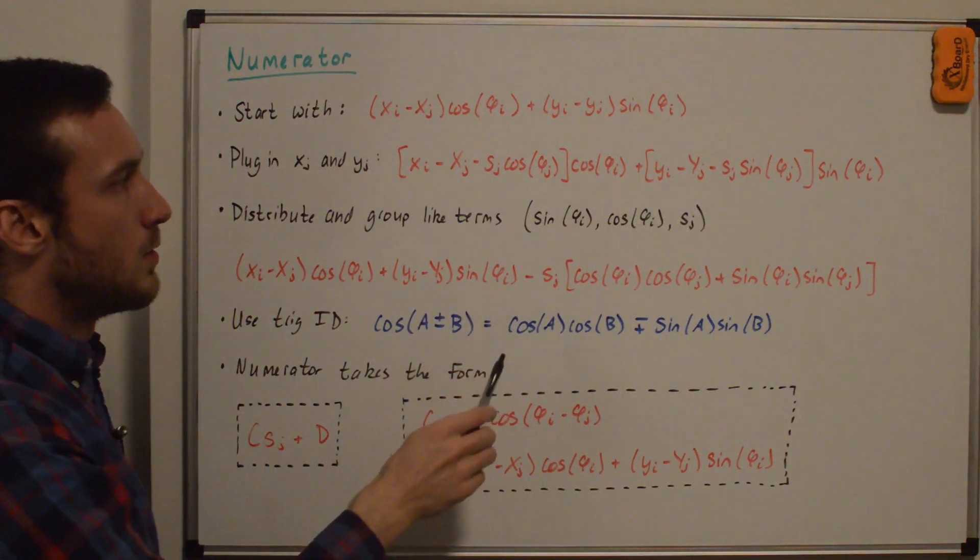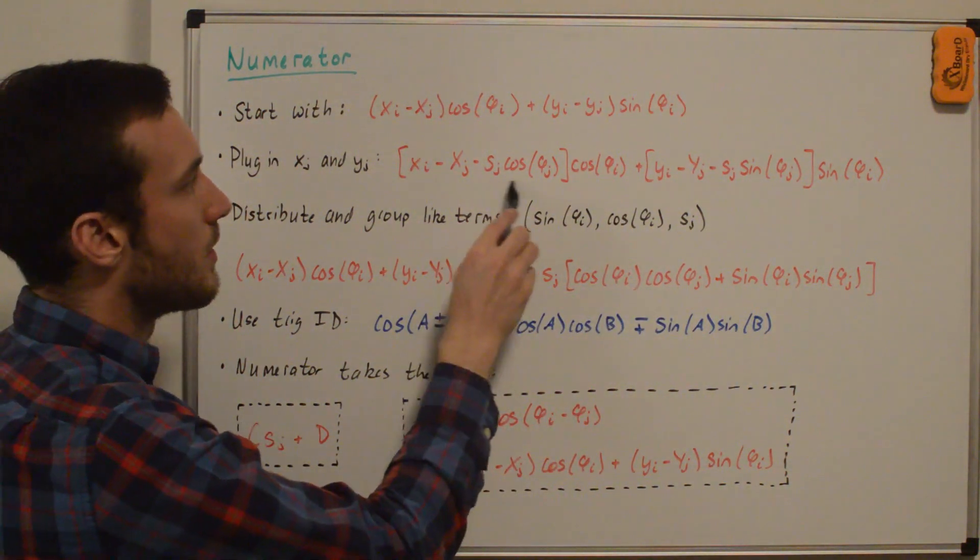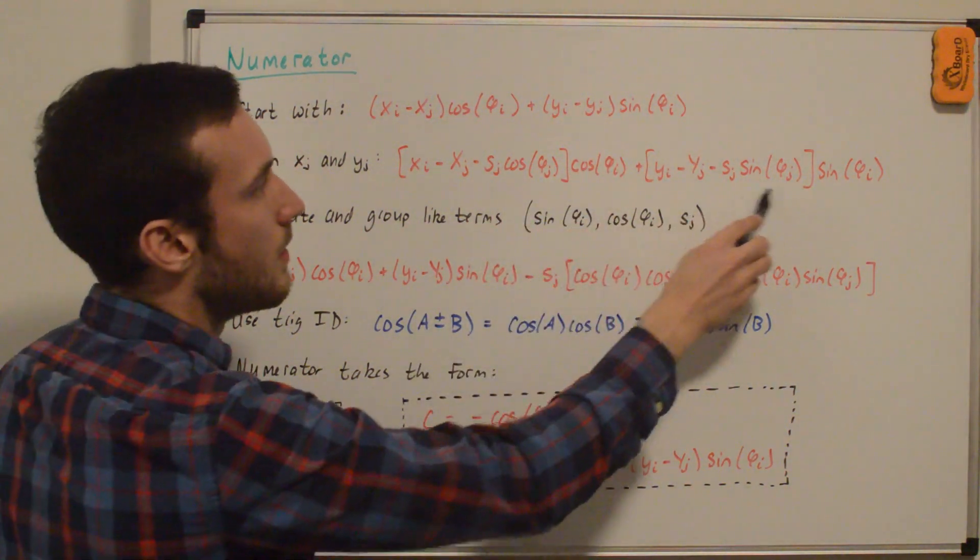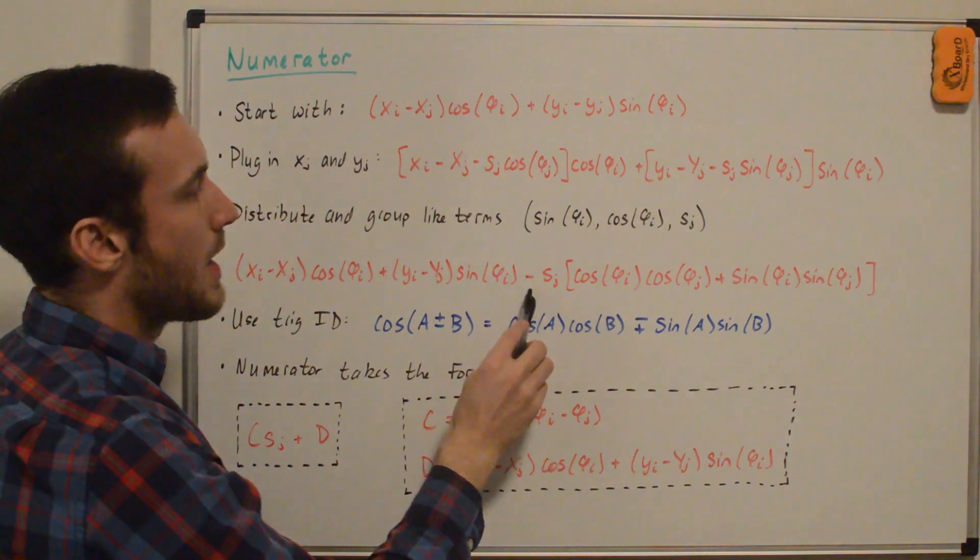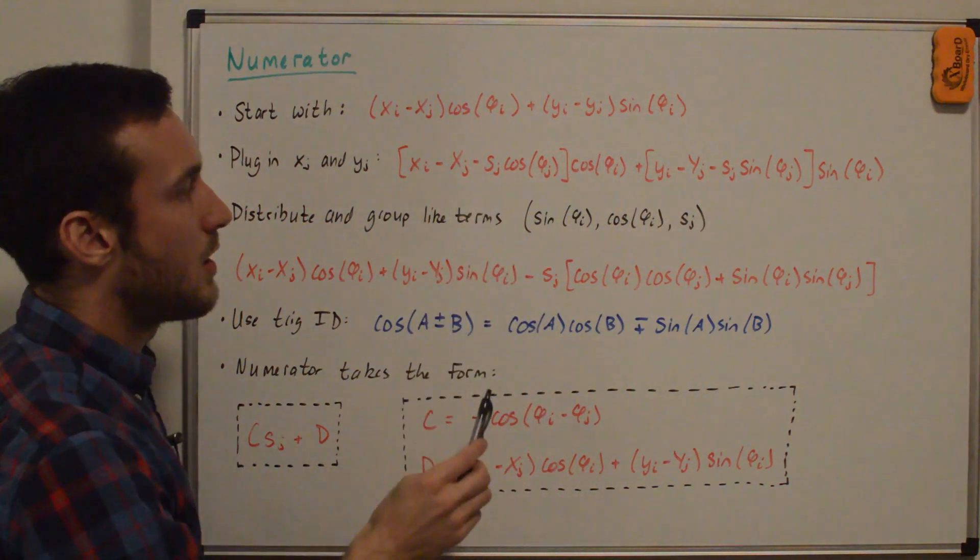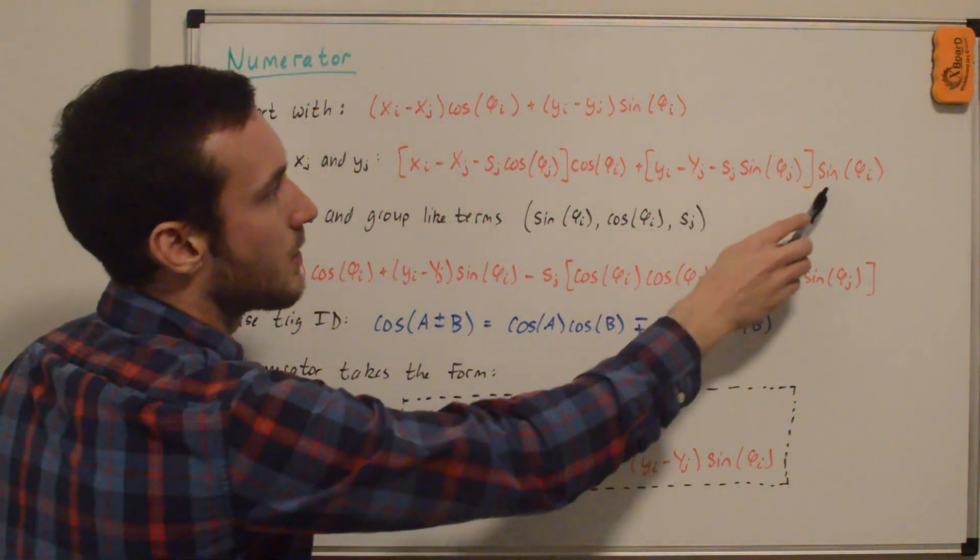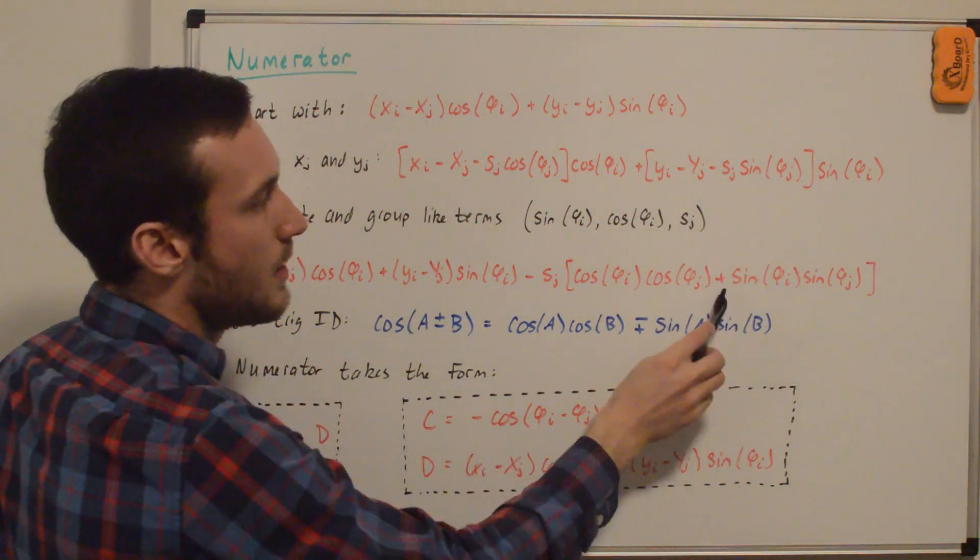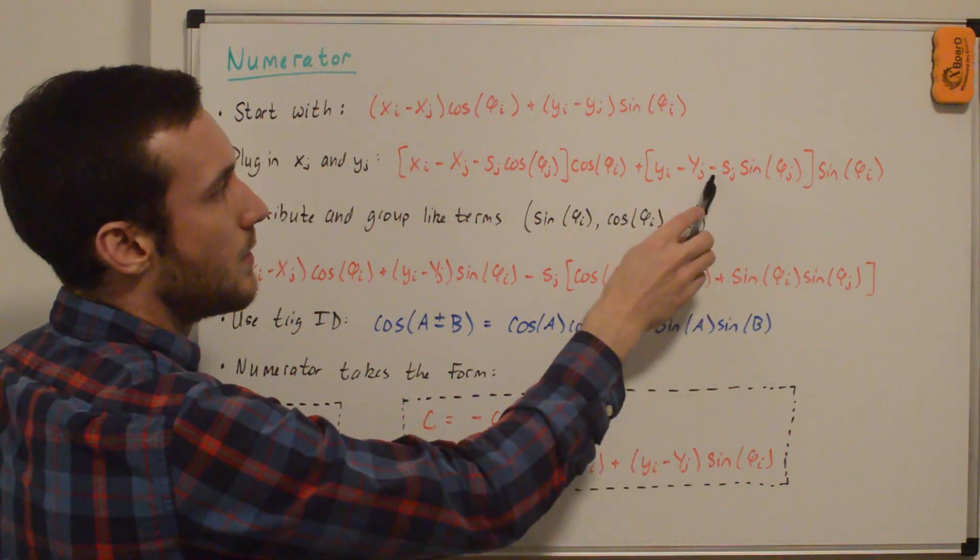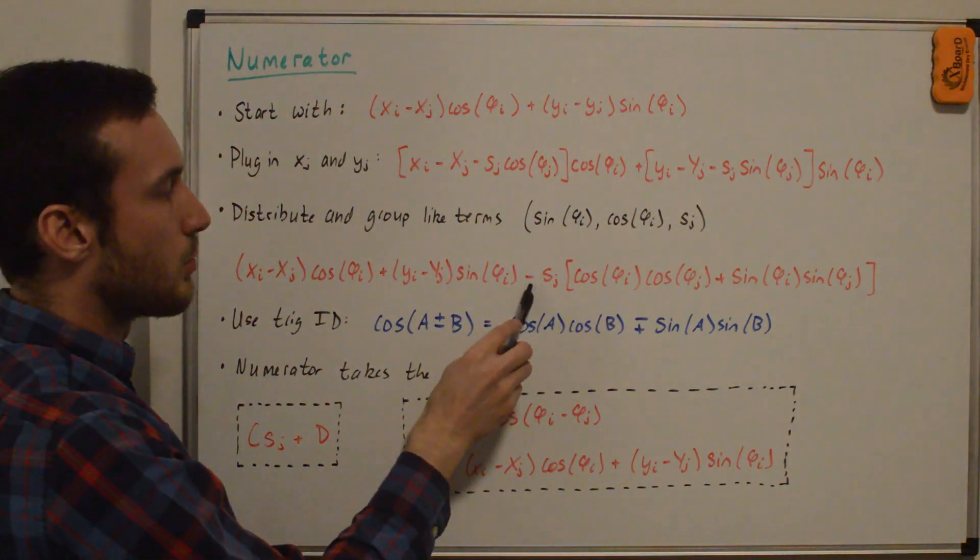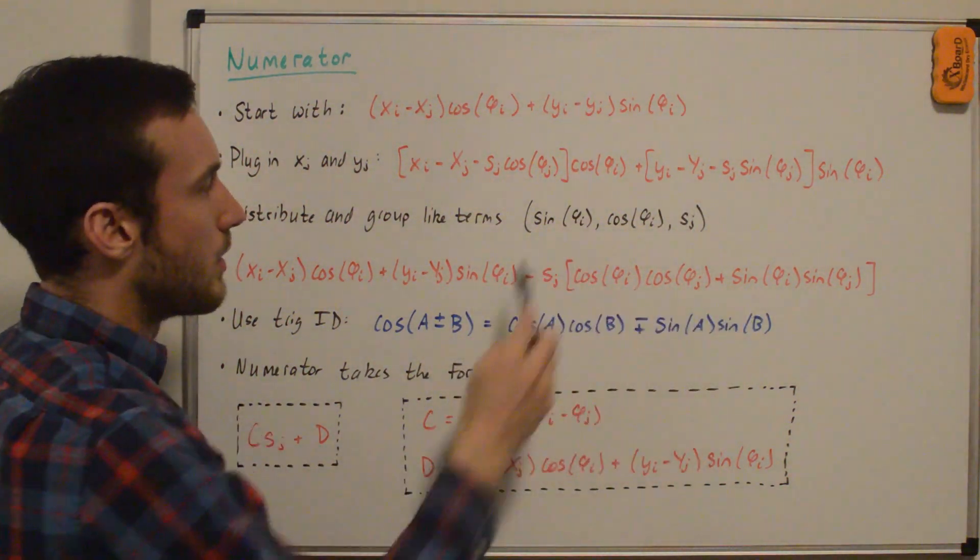And then I'm going to combine all the sj terms. So that's this multiplied by this and this multiplied by that. So we have minus sj. I factored out the sj. And then we have cosine phi i, cosine phi j. Then we have sine phi i, sine phi j. It's a plus here because even though it's a minus here, it factored out. And so when you multiply through by the negative, you get the appropriate terms.